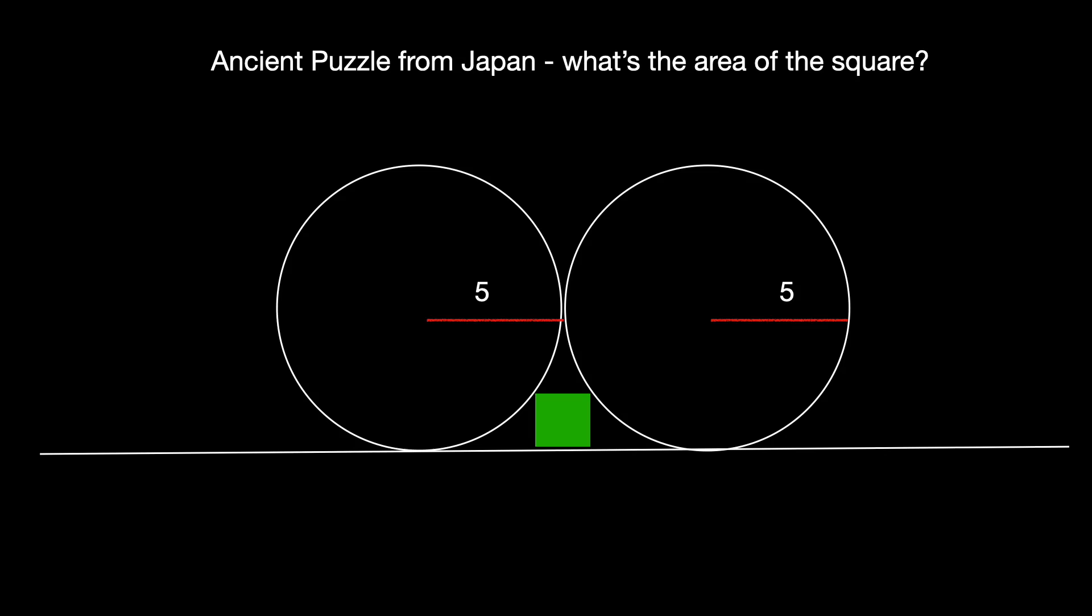So this is an ancient puzzle from Japan. What's the area of the square? We have two congruent circles, each with a radius of five.